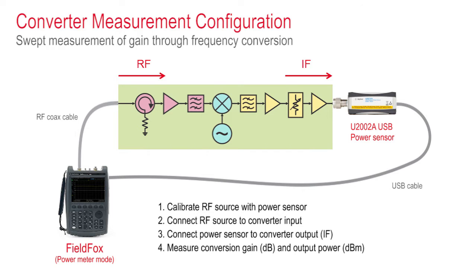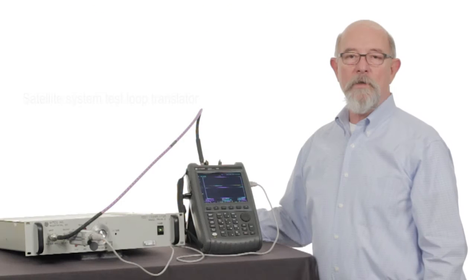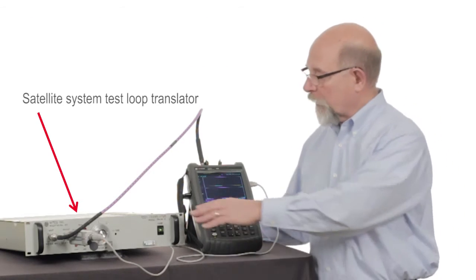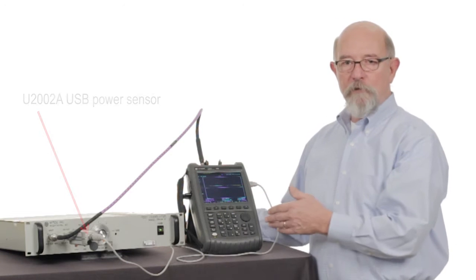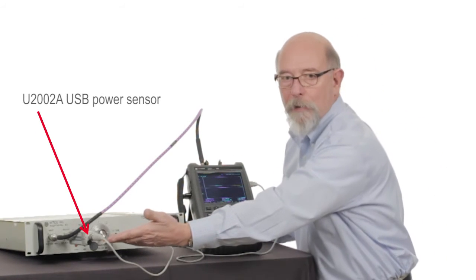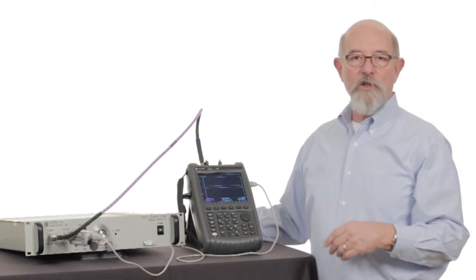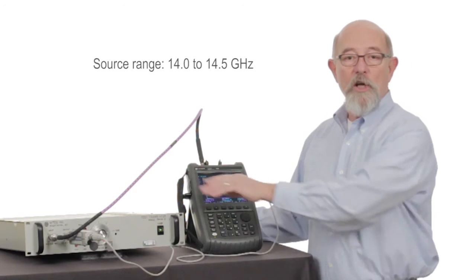I'll show you how to accurately measure conversion gain. We'll be testing a satellite system test loop translator. Here I've set up FieldFox with a broadband USB power sensor. I've set the source range in FieldFox to the RF frequency, 14.0 to 14.5 GHz.